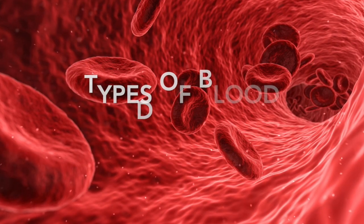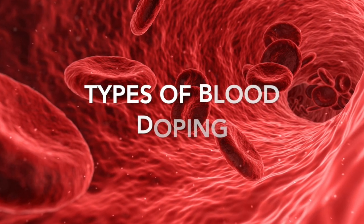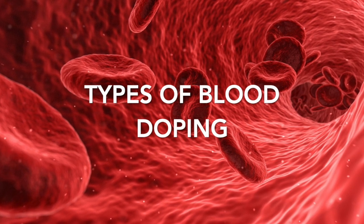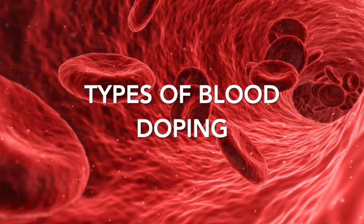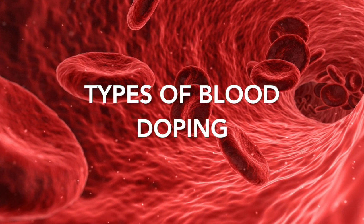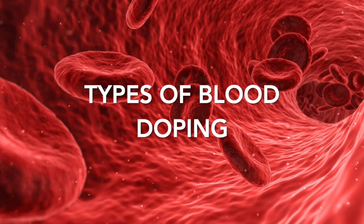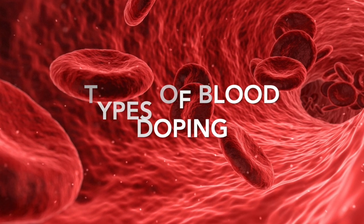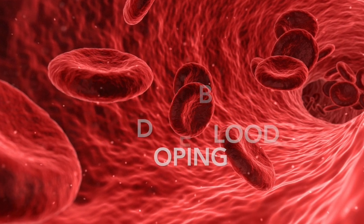There are three types of blood doping that contribute to an increase in hemoglobin mass, including blood transfusions, injections of erythropoietin, and injections of synthetic oxygen carriers.